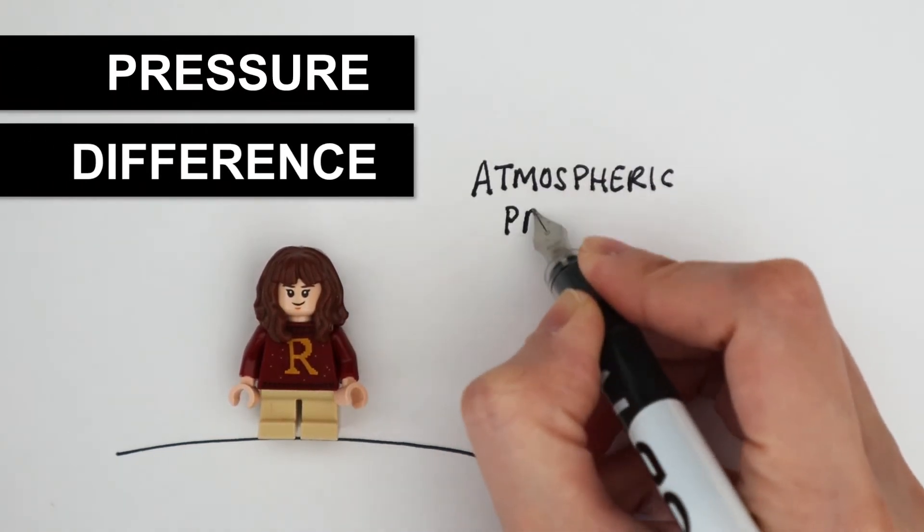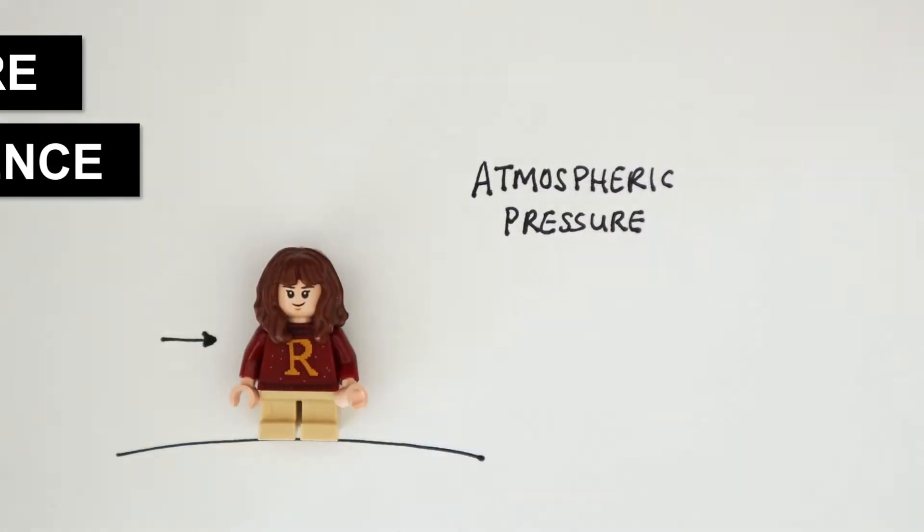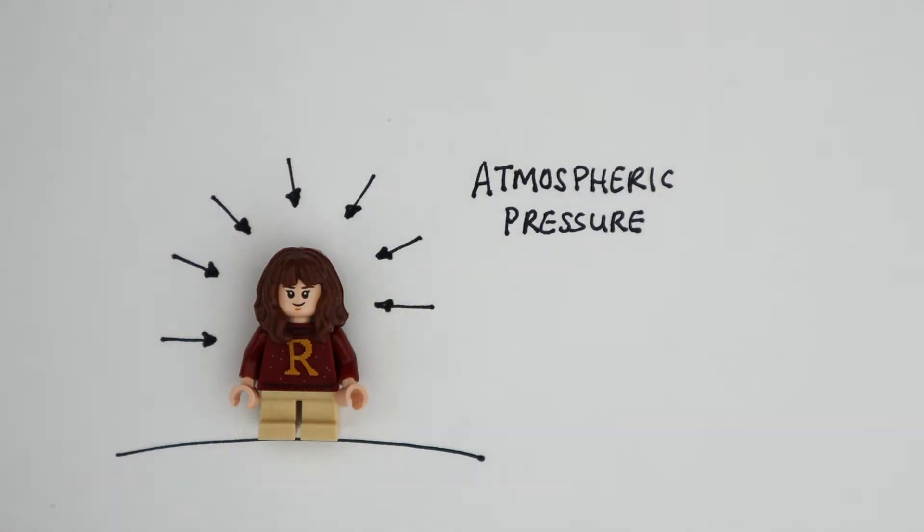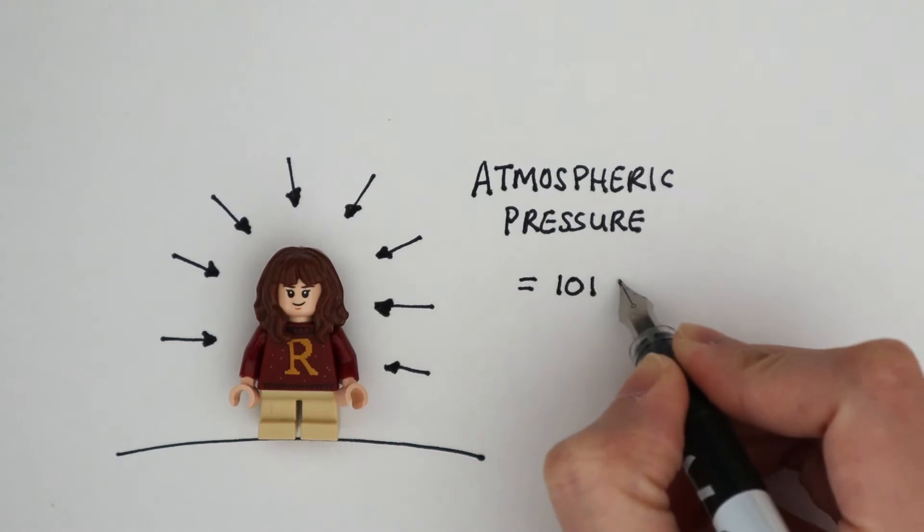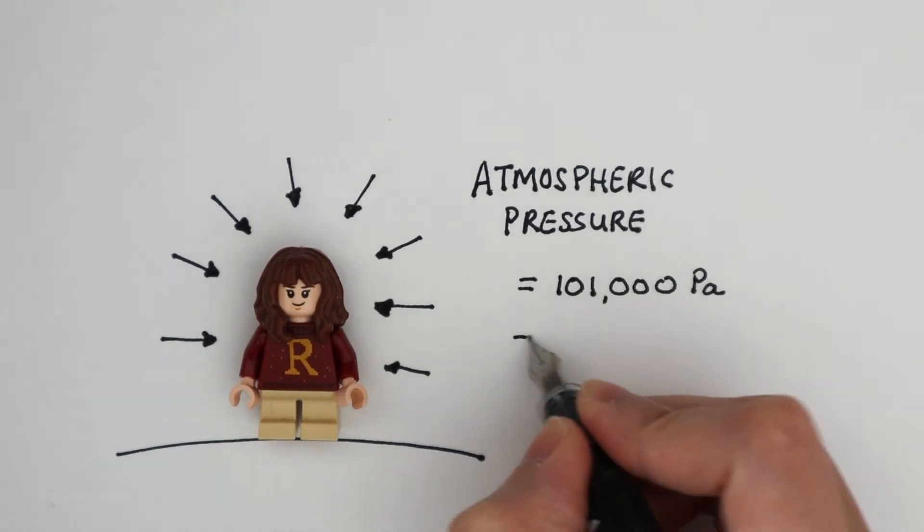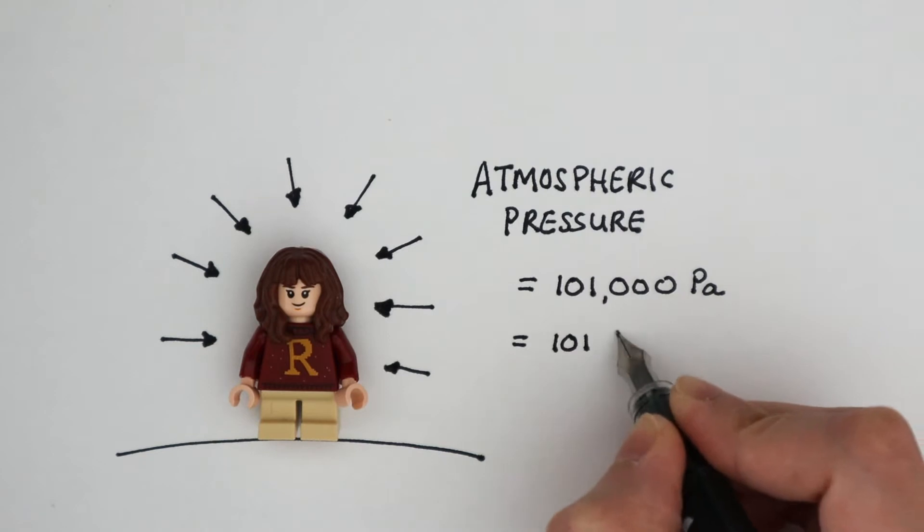Atmospheric pressure is the pressure we experience all the time due to the air around us. At sea level, atmospheric pressure is 101,000 pascals, or you can call it 101 kilopascals.